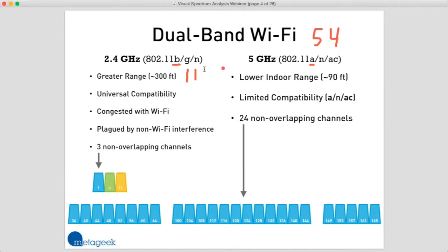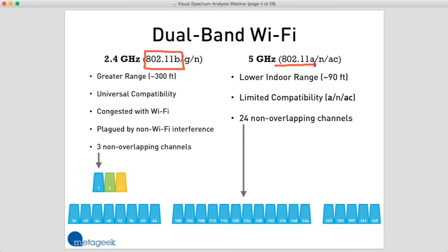Back then, Wi-Fi wasn't even called Wi-Fi yet — it was just called 802.11 — and for the most part it was being used for wireless barcode scanners in warehouses. When people were comparing 802.11b and 802.11a and deciding which gear to buy, ultimately they went for 802.11b because it had better range, was cheaper, didn't require as much equipment to deploy, and they didn't need the fast speeds of 802.11a.